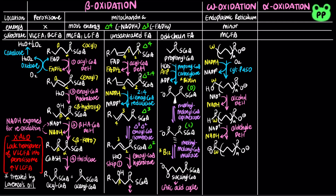At this point, either end can be attached to coenzyme A and undergo beta-oxidation by the normal route. Eventually, the double-ended fatty acid will produce dicarboxylic acid succinate, which can enter the citric acid cycle.